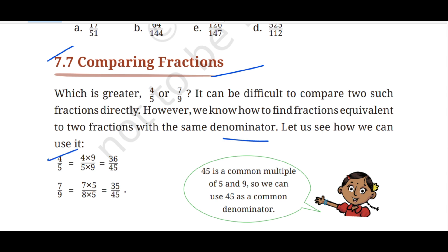Here is an example. Which is greater: 4 upon 5 or 7 upon 9? It can be difficult to compare two such fractions directly. However, we know how to find fractions equivalent to two fractions with the same denominator. Let us see how we can. So here we are going to compare fractions.